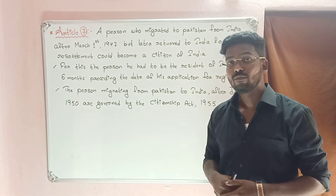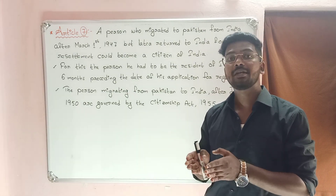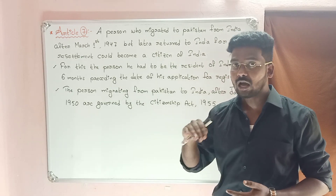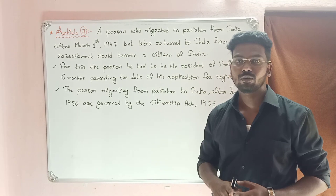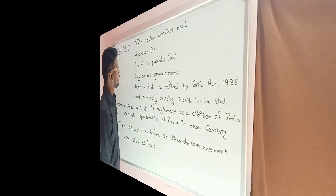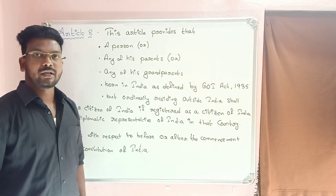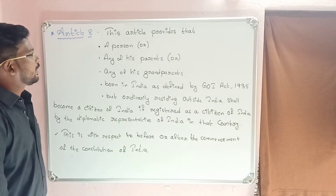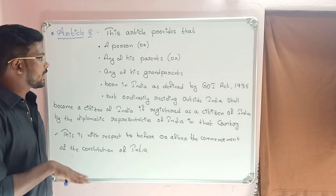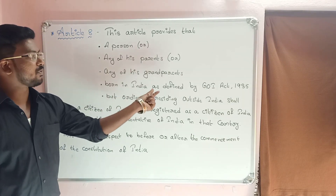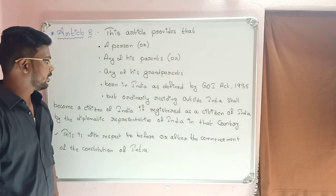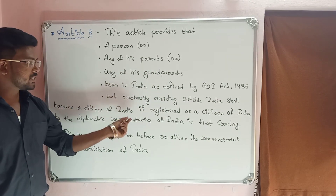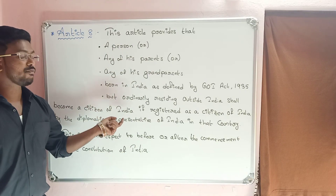Article number 8: This article provides that a person, or any of his parents, or any of his grandparents, born in India as defined by the Government of India Act 1935, but ordinarily residing outside India, shall become a citizen of India if registered as a citizen of India by the diplomatic representative of India in that country.